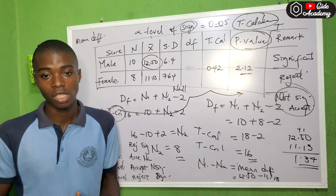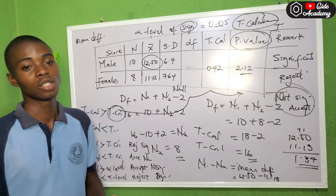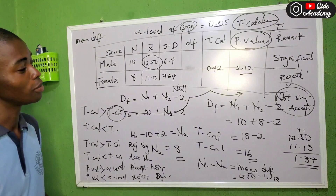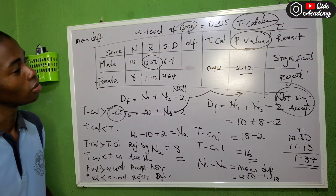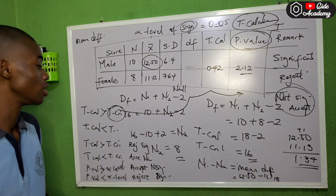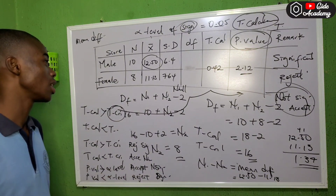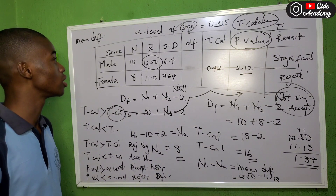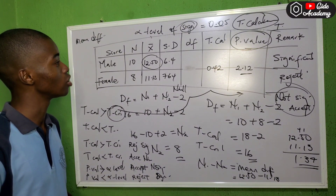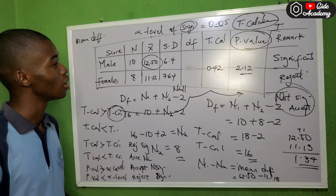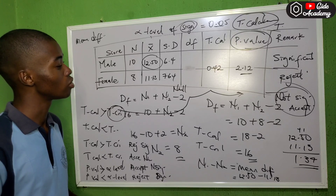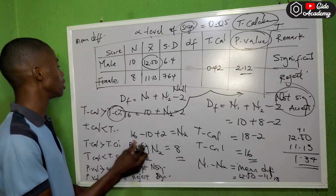So to summarize: rejecting a true null hypothesis is a type one error; accepting a false null hypothesis is a type two error. That covers the calculation aspect of tutorial one-three.